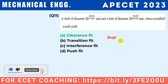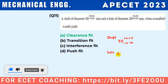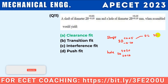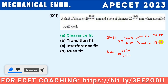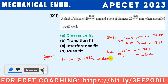A shaft of diameter 20 (+0.05 / -0.10) and a hole of diameter 20 (+0.20 / +0.10). When assembled, what fit does this yield? Upper limit of hole = 20.20, lower limit of hole = 20.10. Important note: if the lower limit of the hole is greater than the upper limit of the shaft, it is a clearance fit. If the lower limit of the shaft is greater than the upper limit of the hole, it is an interference fit.